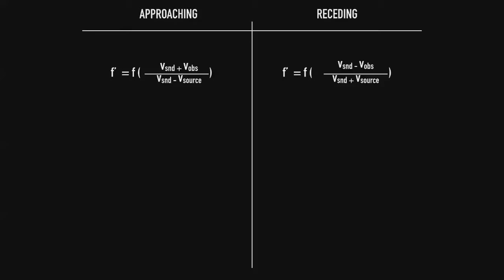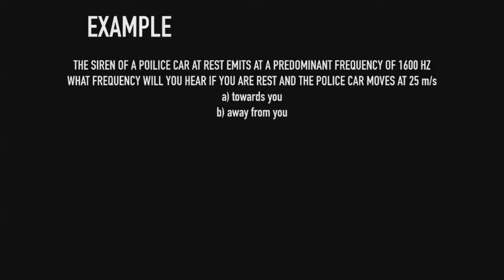The key idea is that when two things are approaching, the velocity of the observer is positive relative to the source, but the velocity of the source is negative relative to the observer — that's where the plus and minus signs come from. For receding, the same logic applies with switched signs. More than just the formulas, it's important to understand that as two things approach, frequency gets larger, and as they move away, frequency gets smaller. Note that the velocity of sound here is in air, but it can be in any medium.